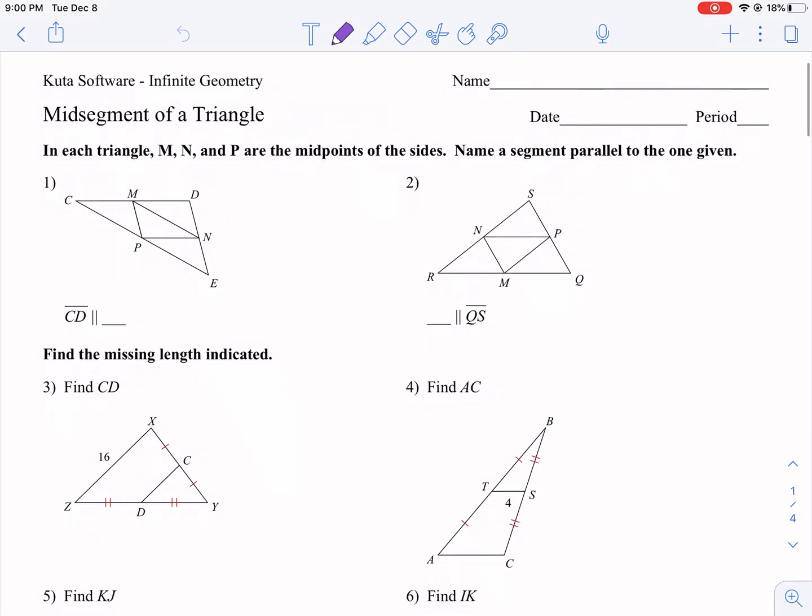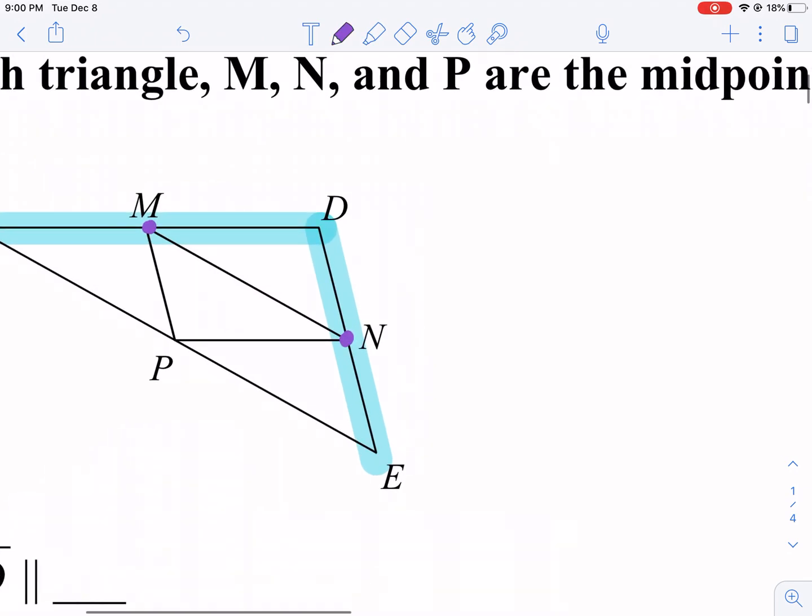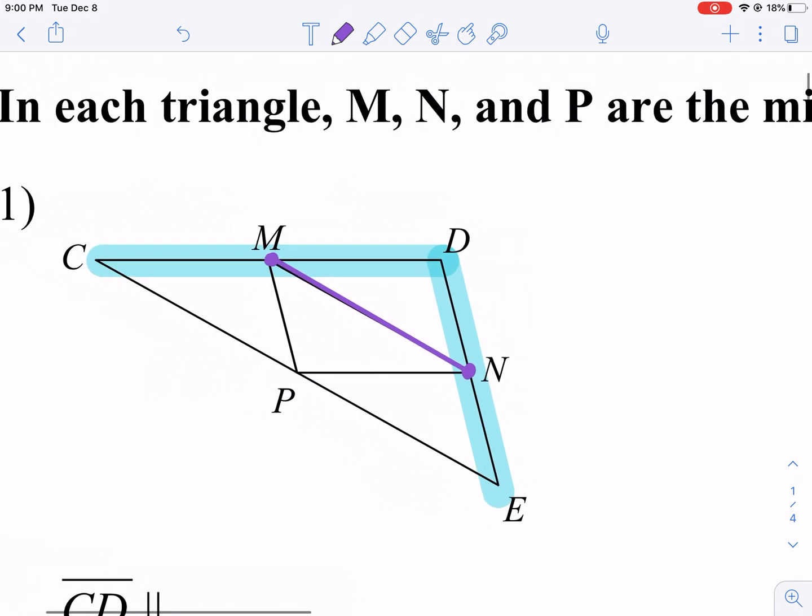So what is a mid-segment of a triangle? It's exactly as it sounds. If we have a side of a triangle, like this one CD, the midpoint would be this one. And then we have another side, DE, and another midpoint. A mid-segment connects two midpoints. That's why it's called a mid-segment.